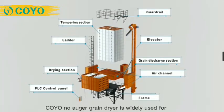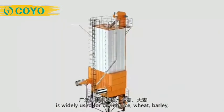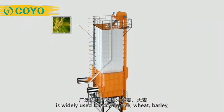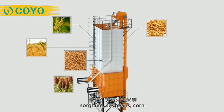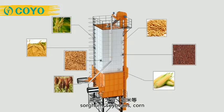The grain dryer is widely used for drying paddy, wheat, barley, sorghum, soybean, rapeseed, corn, and other grains and their seeds.